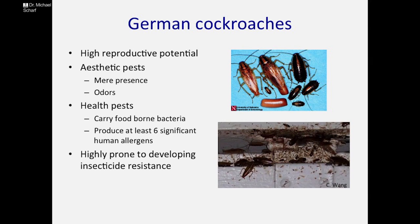Jumping into German cockroaches — this is probably the first pest we learn about in the industry. What are the factors that make them pests? Number one is their really high reproductive potential. A female German cockroach has an egg case and up to 45 first-instar cockroaches can come out of that egg case — a huge reproductive potential from one female. Of course they can be aesthetic pests; just their presence is an issue. Cockroaches are creepy, people hate them, and they have that really characteristic odor that we can detect immediately when we walk into an apartment or restaurant.